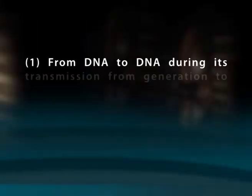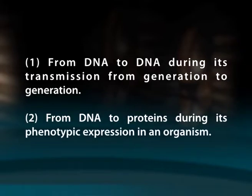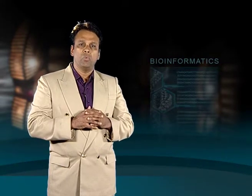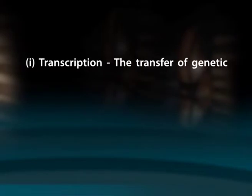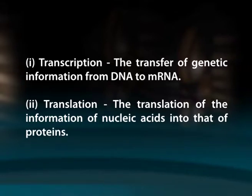According to the central dogma of molecular biology, genetic information flows from DNA to DNA during its transmission from generation to generation, and from DNA to proteins during its phenotypic expression in an organism. The transfer of genetic information from DNA to protein involves two steps: transcription, the transfer of genetic information from DNA to mRNA, and translation, the conversion of nucleic acid information into proteins.